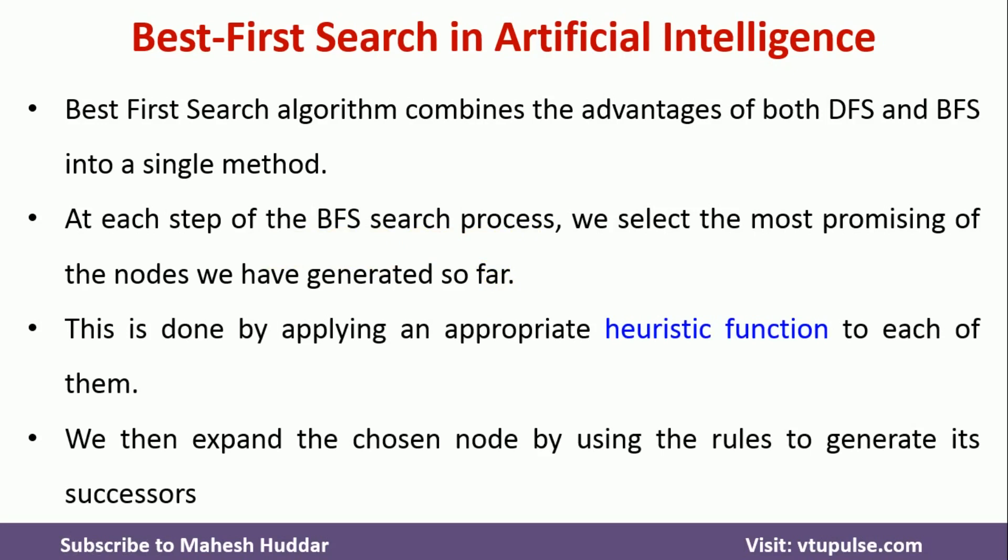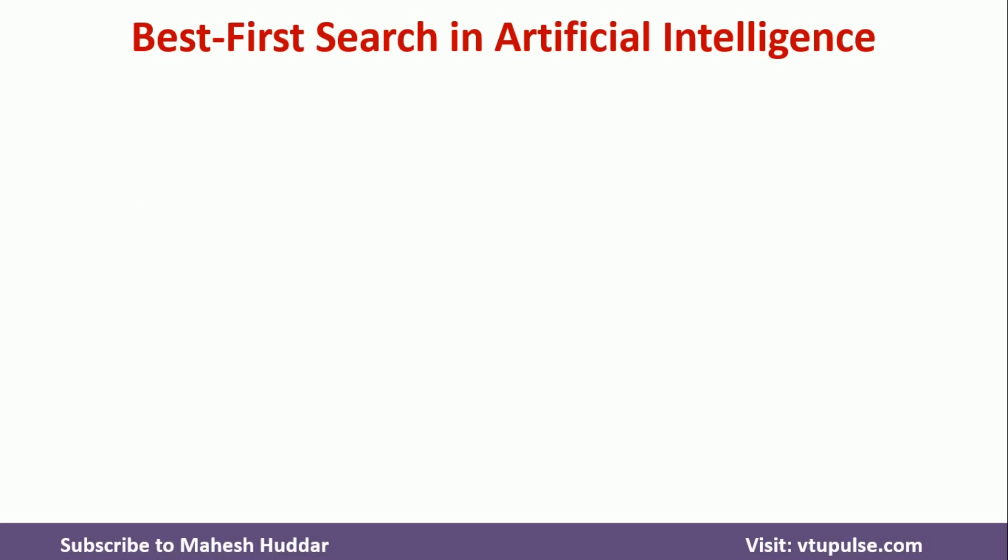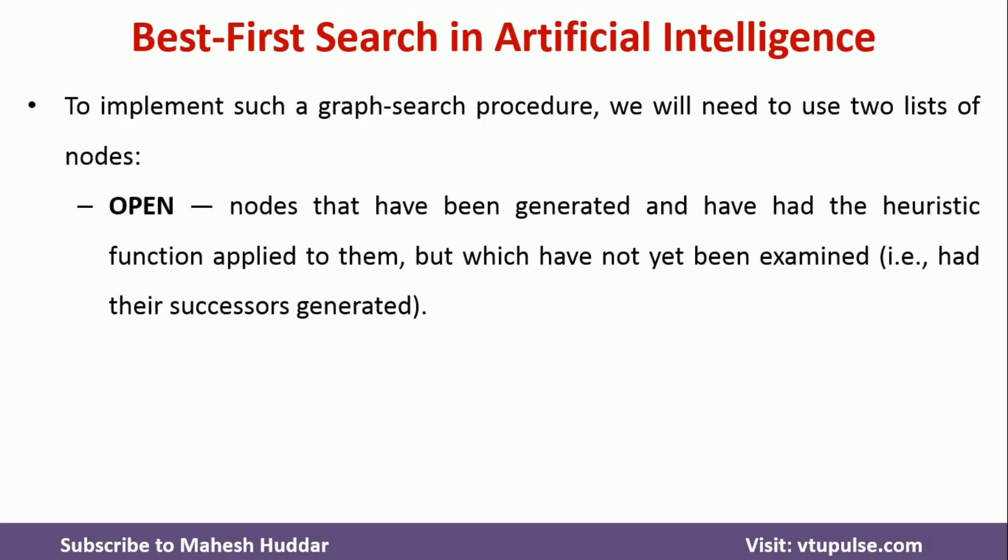We then expand the chosen node by using the rules to generate its successors. That is, once you select a particular node which is promising, we need to get its successor and the same process is applied till we reach the goal state. To implement Best First Search Algorithm, we need two data structures.